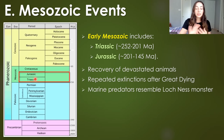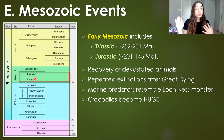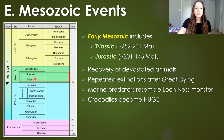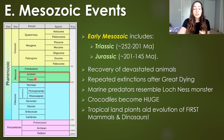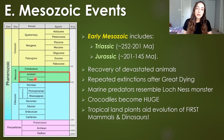We also had marine predators, aka marine reptiles, come on the scene that looked a lot like sea monsters. We had huge crocodiles, like on the thumbnail, and we had tropical land plants evolve that aided the evolution of the very first mammals and dinosaurs in the Triassic.